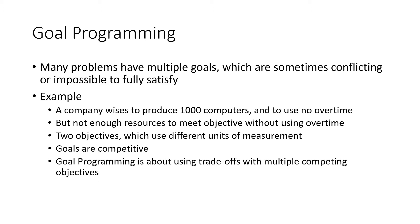For example, if a company wants to produce a thousand computers but overtime is costly so they don't want any overtime, but there's not enough resources to do it without overtime — you have two objectives. You want to meet a thousand computers but you don't want to spend money on overtime. Something has to give. These goals are competing against each other and use different units of measurement, so you can't trade one off against the other directly.